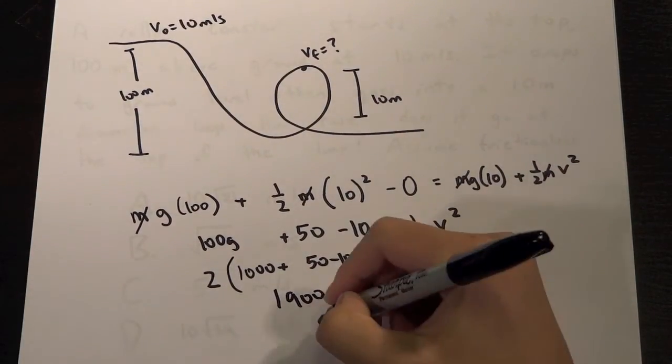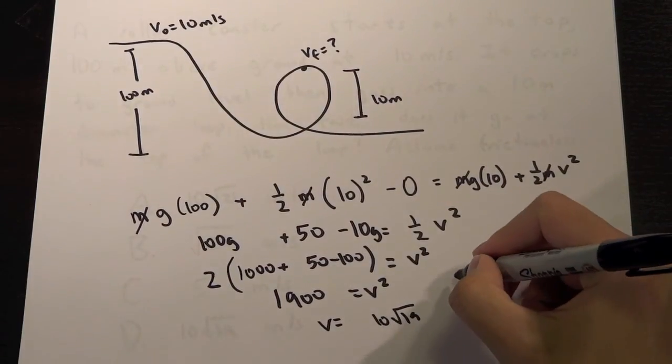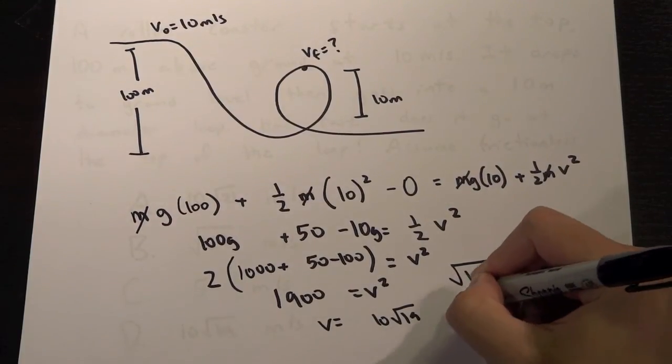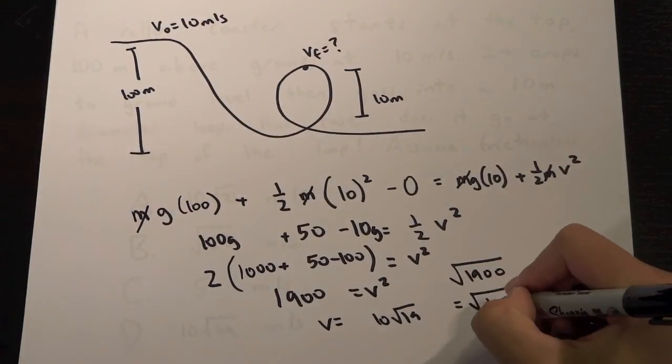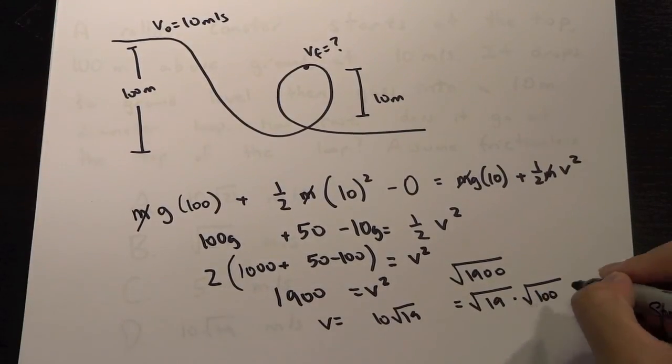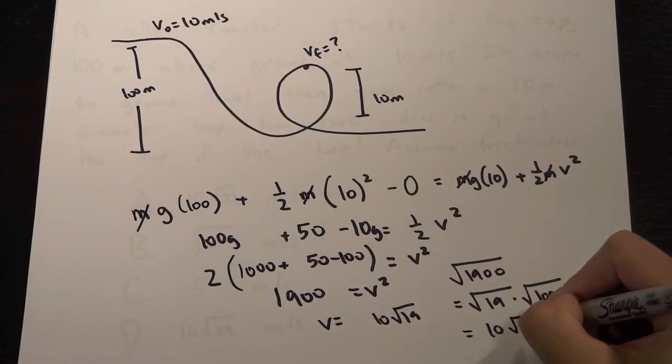And then V equals 10 square root of 19. If you remember from how we actually solved this, square root of 1,900 is the same thing as square root of 19 times the square root of 100, right? Because 19 times 100 is 1,900. And that's how we got 10 square root of 19.